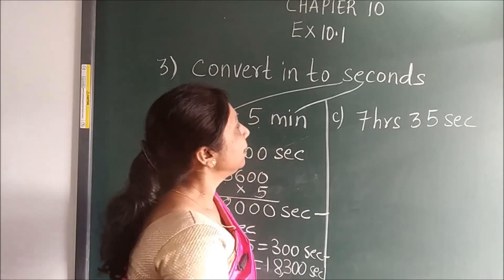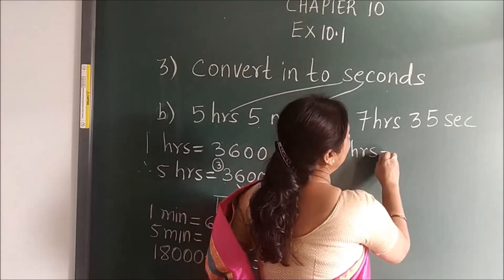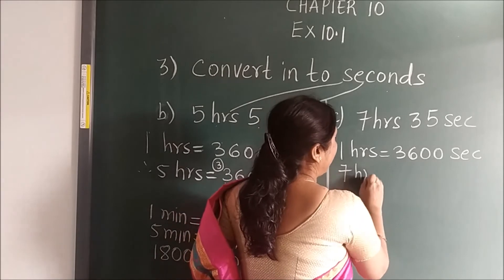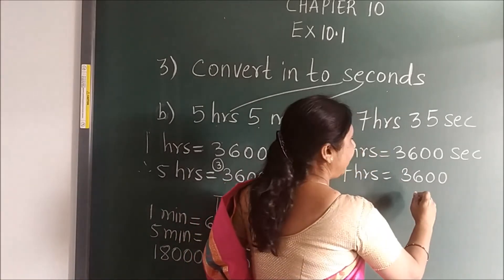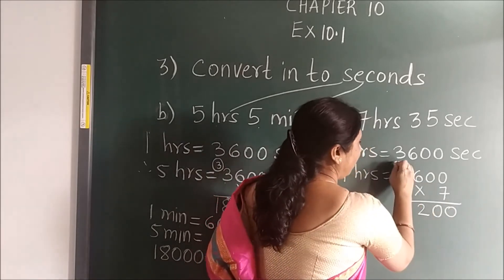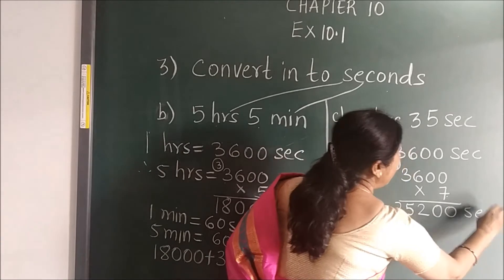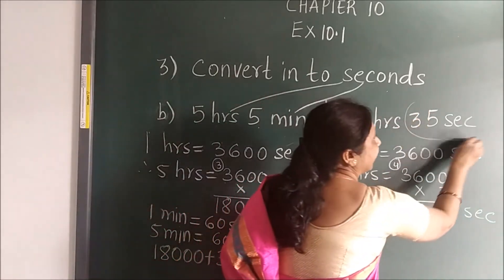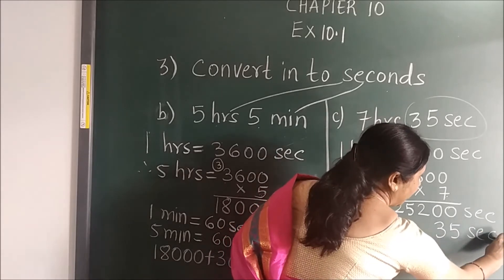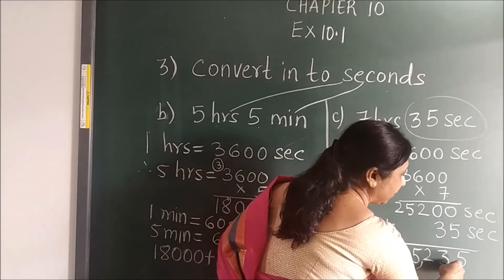Now you can see the next sum. Same thing we are going to do — hours and seconds. First convert: 1 hour is equal to 3600 seconds. So 7 hours: you will multiply 3600 by 7. 7 zeros are 0, 7 zeros are 0, 7 sixes are 42, 7 threes are 21 — giving 25,200 seconds. Here it is given 35 seconds, which is already in seconds, so you directly add 35 seconds. When you add, you get the answer: 25,235 seconds.